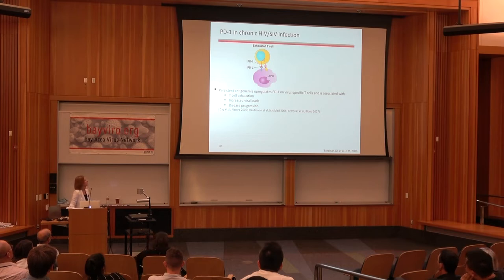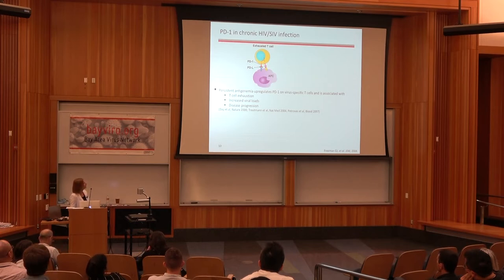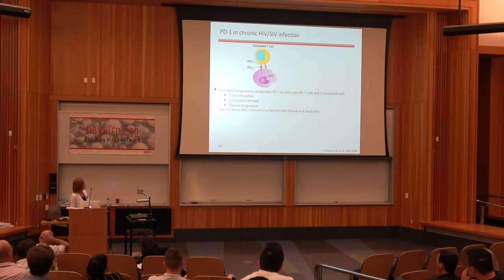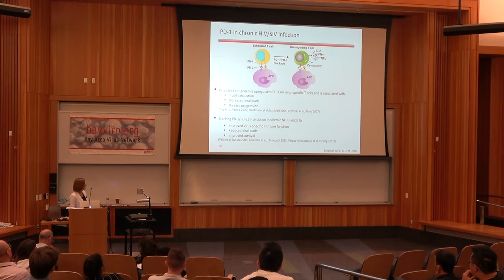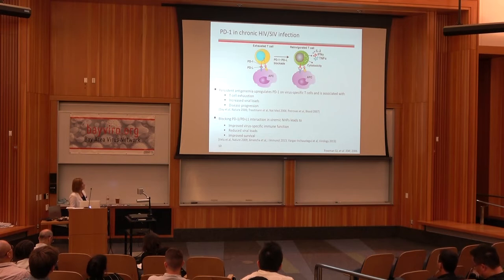An additional concept we wanted to test was checkpoint inhibitor use. You may be familiar with checkpoint inhibitors in oncology — there are numerous approved antibodies that block either PD-1 ligand or receptor. Similarly, chronic viral disease like HIV also leads to upregulation of these exhaustion markers on virus-specific cells, and a number of groups have shown this leads to T cell exhaustion, increased viral loads, and disease progression. Blocking this signaling axis in chronically infected viremic non-human primates has shown improved viral-specific immune function, reduced viral loads, and improved survival.